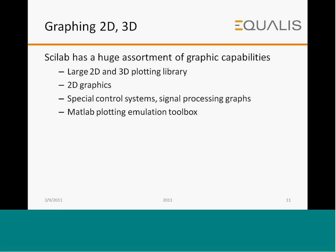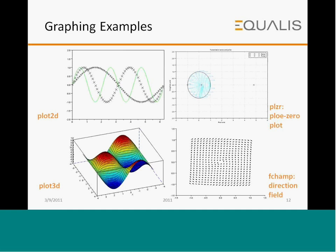To plot 2D and 3D graphs, Scilab has an assortment of graphic capabilities. There is a large 2D and 3D plotting library, 2D graphics, special control system and signal processing graphs, and a MATLAB plotting emulation toolbox as well. This covers 2D plots, 3D plots, pole-zero plots, and direction fields, with examples shown here.